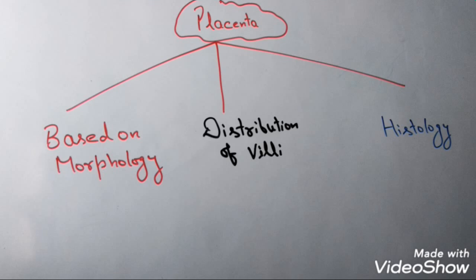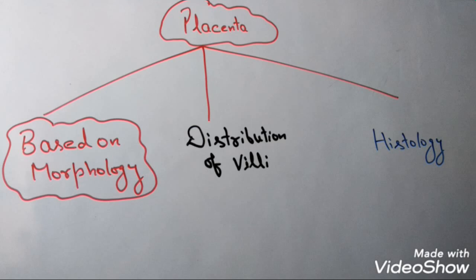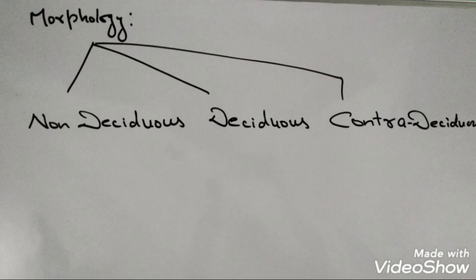Besides this, the placenta has been classified based on morphology, based on distribution of villi, and based on histology. We will discuss all three classifications one by one. Based on morphology, the placenta is divided into three types: non-deciduous type, deciduous type, and contra-deciduous type.